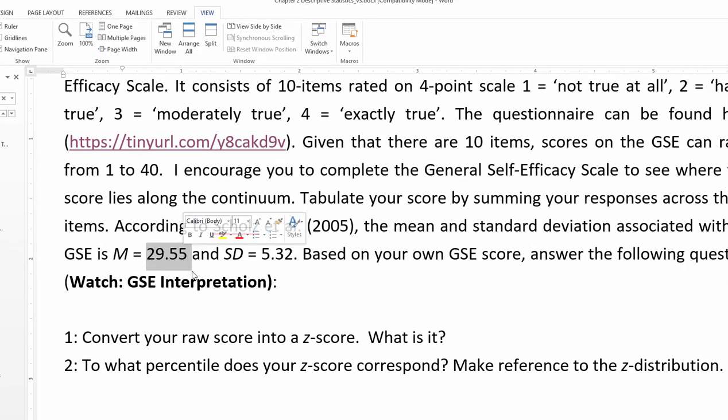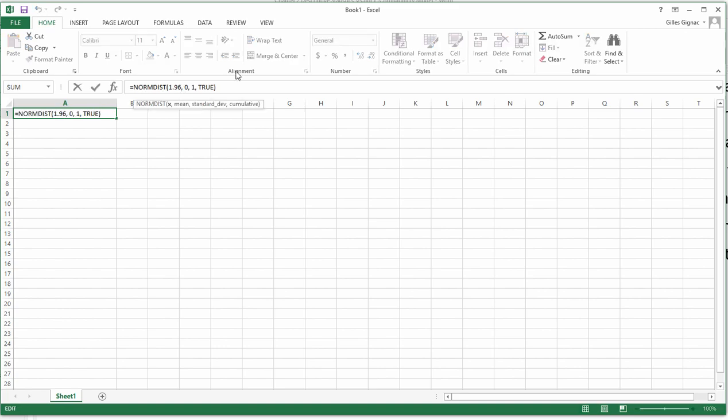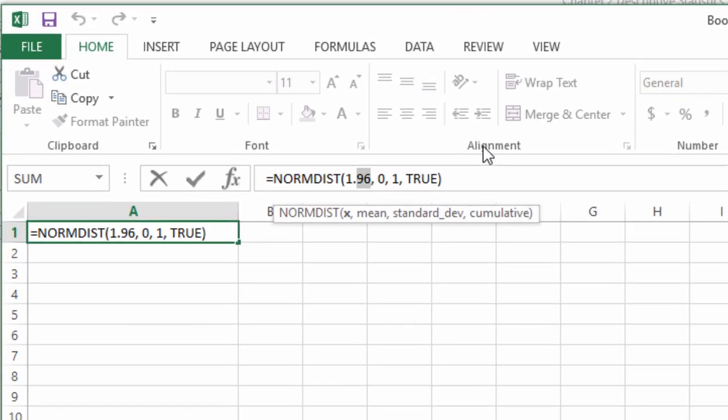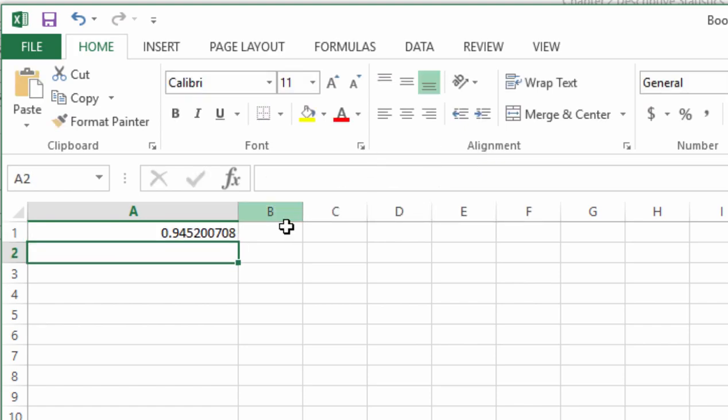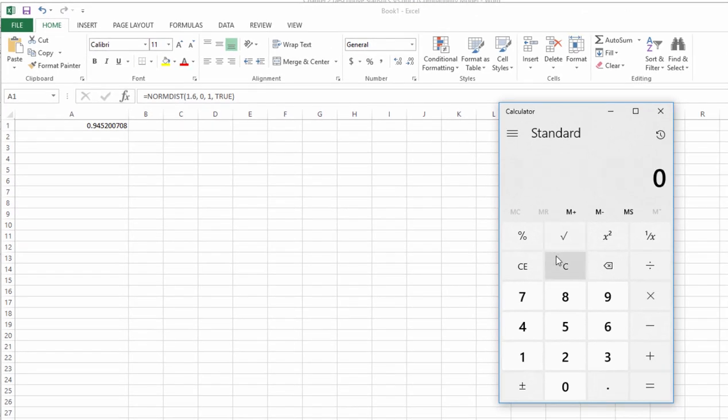So let's look at the z-score that was negative where someone scored 21 on this 10-item scale. 21 minus 29.55 equals negative 8.55 divided by 5.32 equals negative 1.60. Now I just have to change—I can only use positive values here. So 1.60 is 94.52.